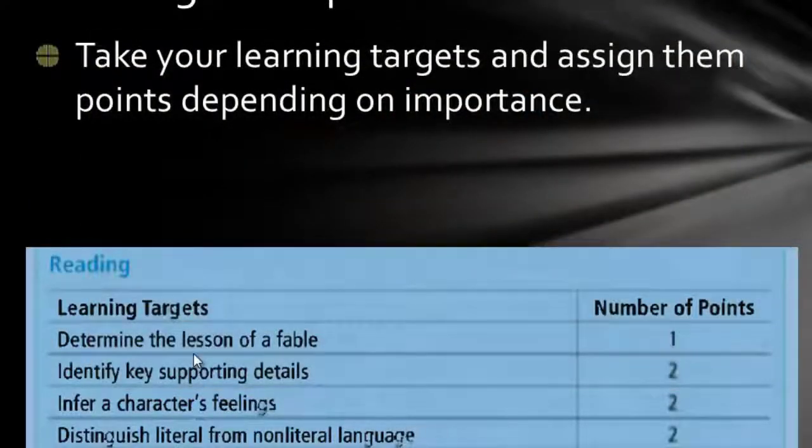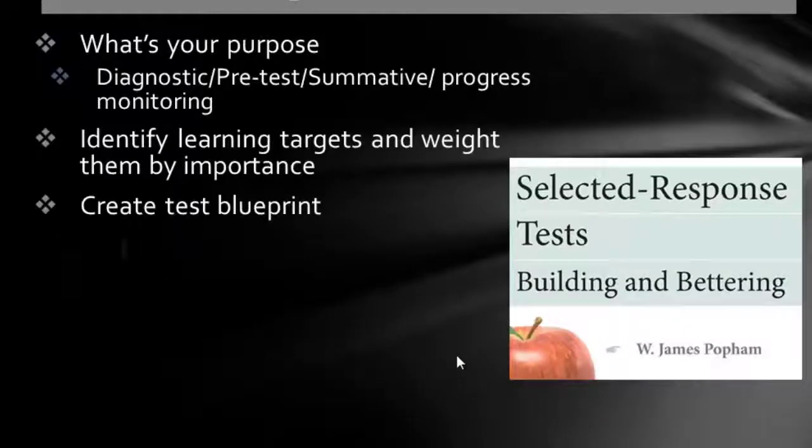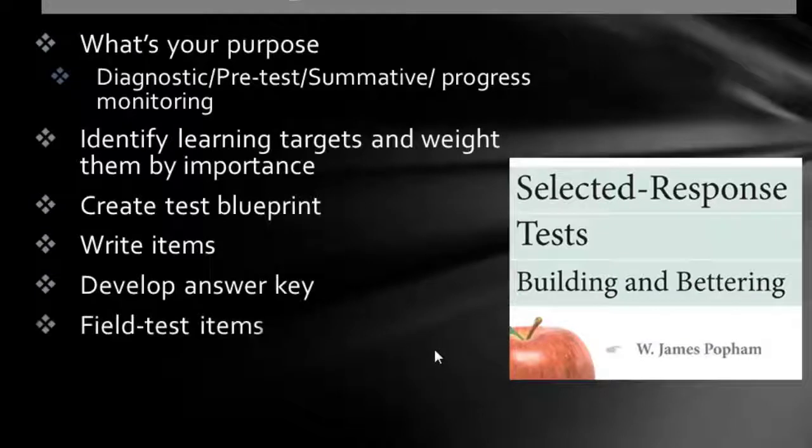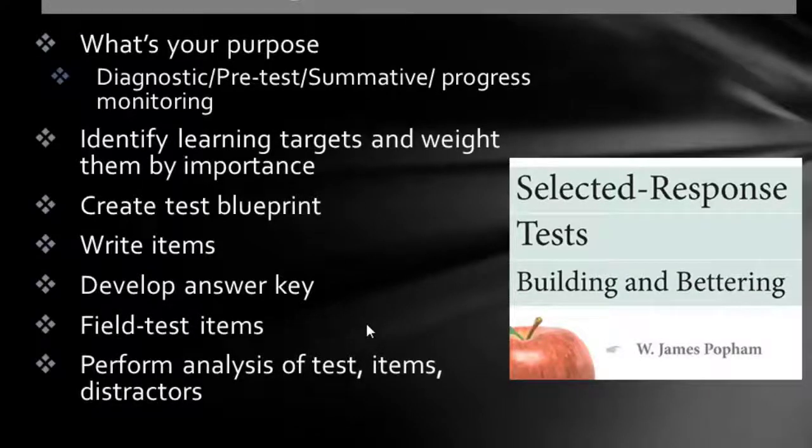Then you're going to create a test blueprint — a very simple one. In Chapter 5 of Chapaway et al., they have a couple of blueprints. On the next slide I have a very simple one: you have the learning target on the left and number of points on the right. Then you're going to write the test items, develop an answer key, and field test the items by giving them to your colleagues. You'll upload them into a discussion board, which I will grade as pass/fail — you upload a test, you get 100.